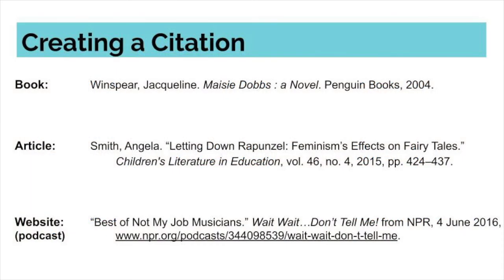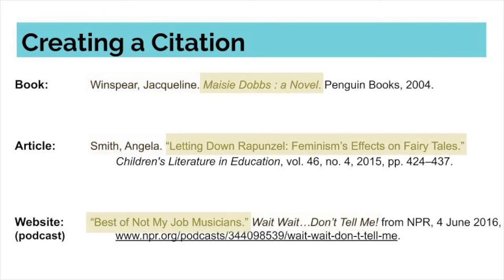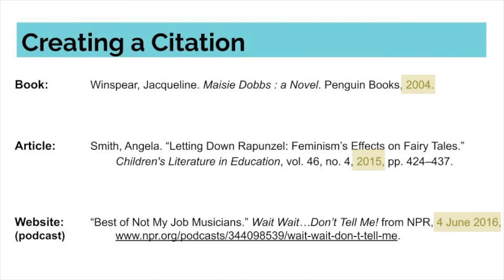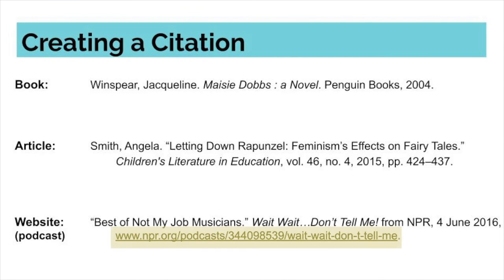No matter which citation style you're using to cite your references, you will generally need the same information when creating a citation for a resource: the author or editor's name, or names if there's more than one; the title of the resource you're citing; the title of the publication or the publishing company; and the date of publication. If you're citing a journal article, you will also need the page numbers of that article, as well as volume and issue of publication. For websites, make sure to get the URL.